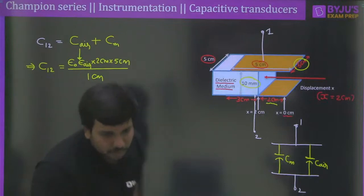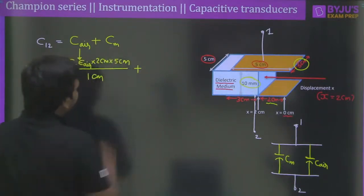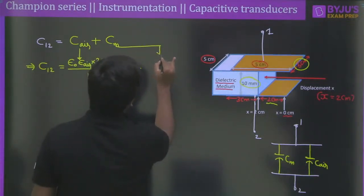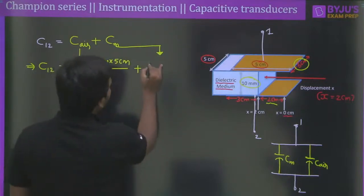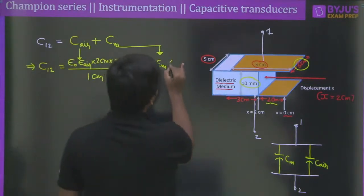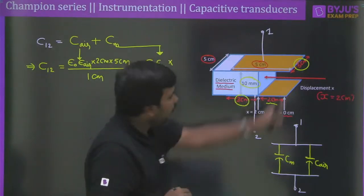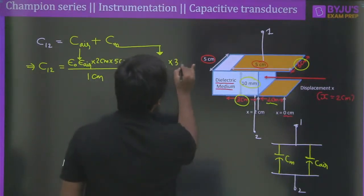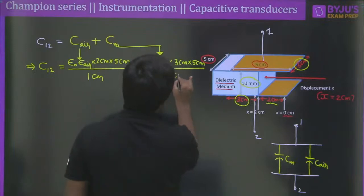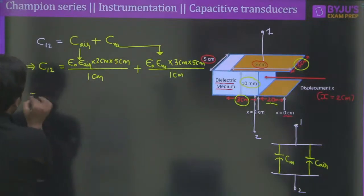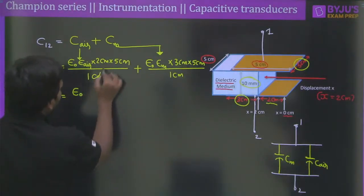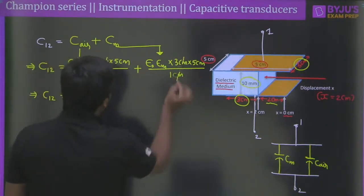Taking ε₀ outside, the cm units cancel. For the air portion: 1 × 2 × 5 = 10, giving 10 × 10⁻² m. For the dielectric portion: 4 × 3 × 5 = 60, giving 60 × 10⁻² m. So C₁₂ = ε₀ × (0.1 + 0.6) = ε₀ × 0.7.